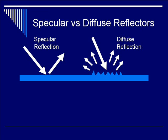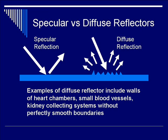On the other hand, diffuse reflectors have a characteristic echo pattern that appears speckled yet homogeneous. This is due to the fact that diffuse reflectors tend to be rough. As the incoming beam gets scattered, it goes in many different directions, albeit at a much smaller amplitude. Examples of diffuse reflectors include the kidney and the liver, because they both consist of many acoustic scatterers. Other examples include the walls of the heart chamber, small blood vessels, and other structures where the interfaces are not smooth.